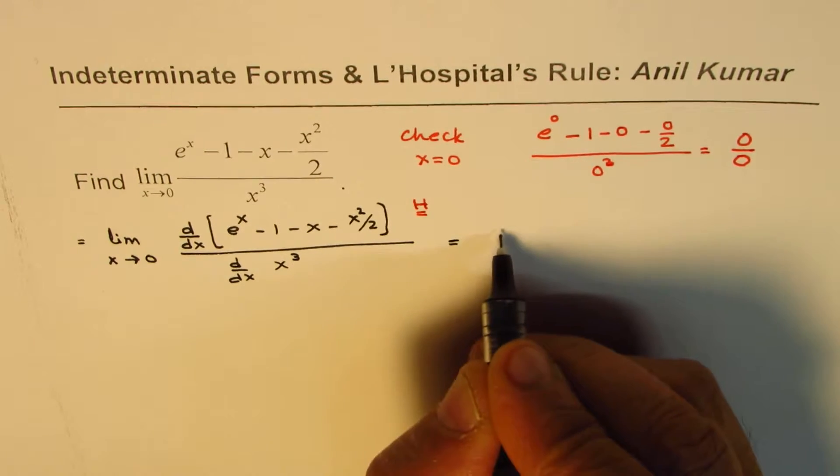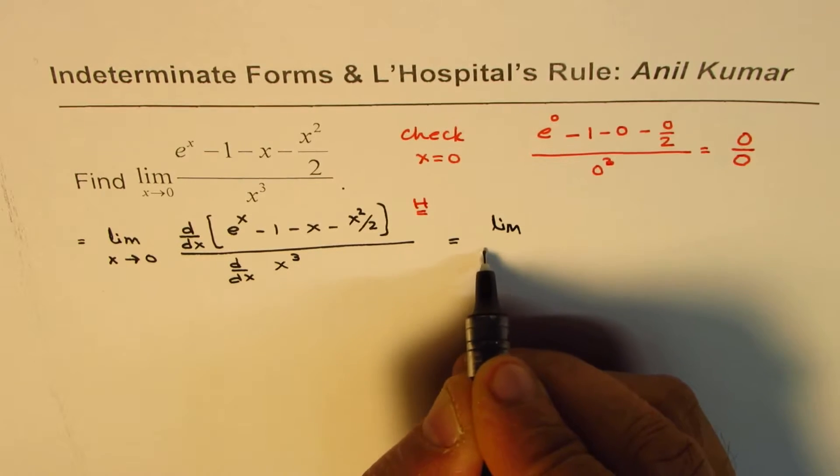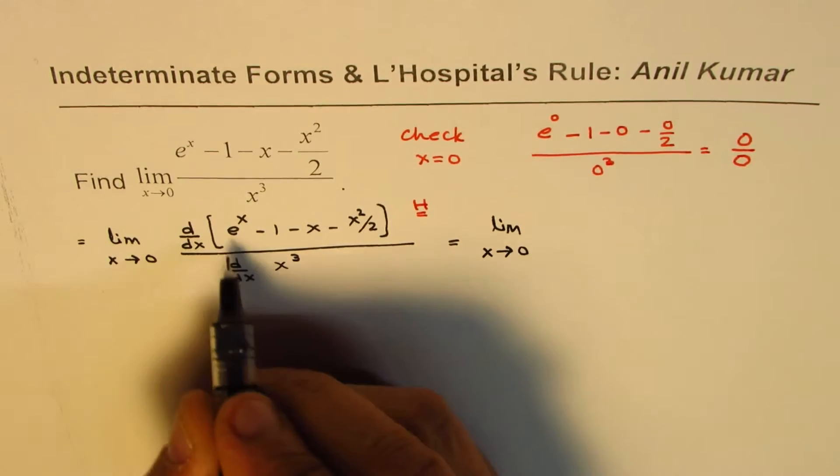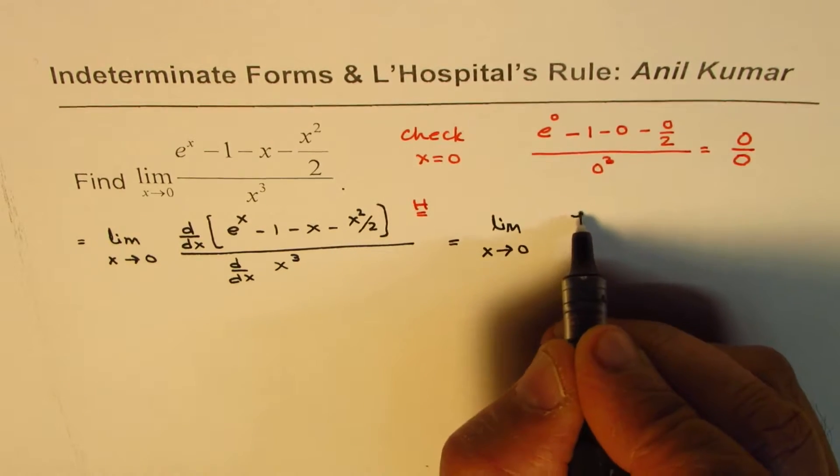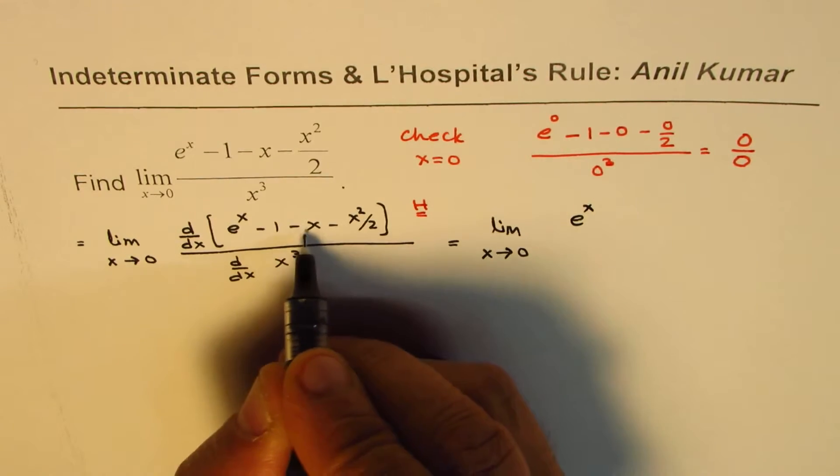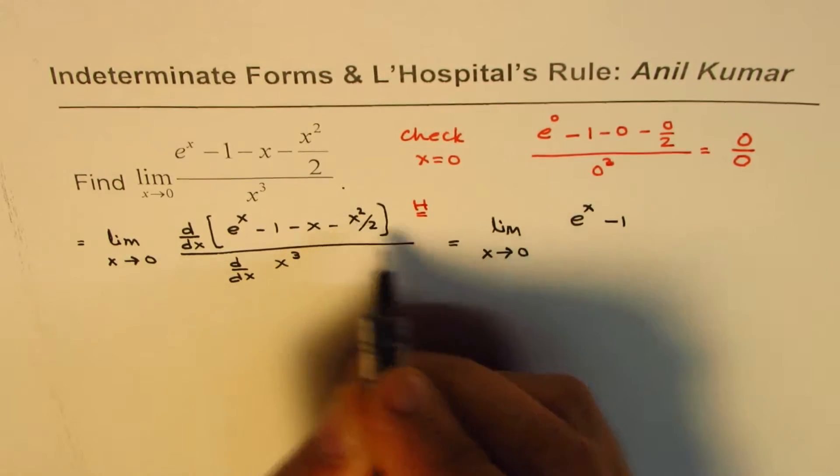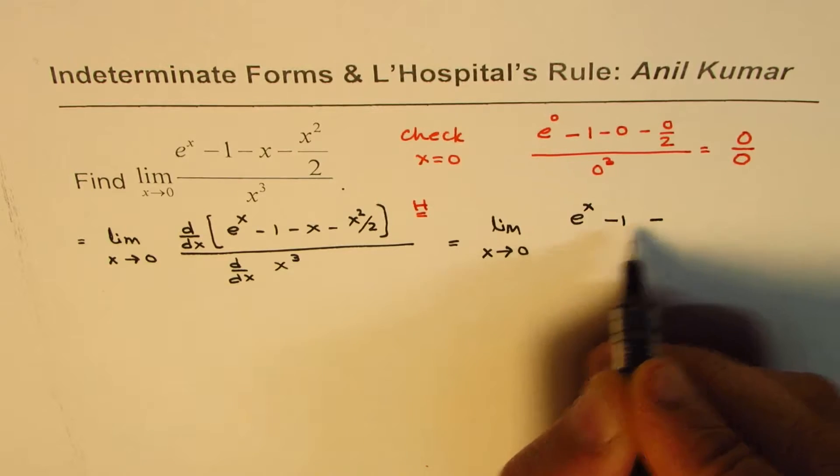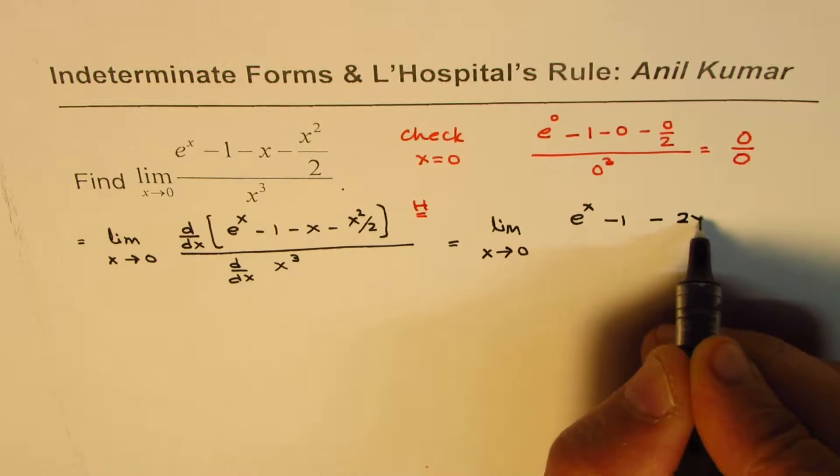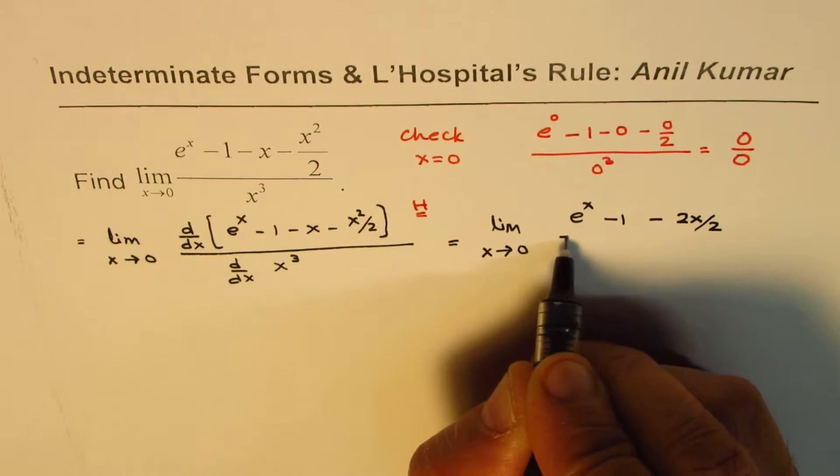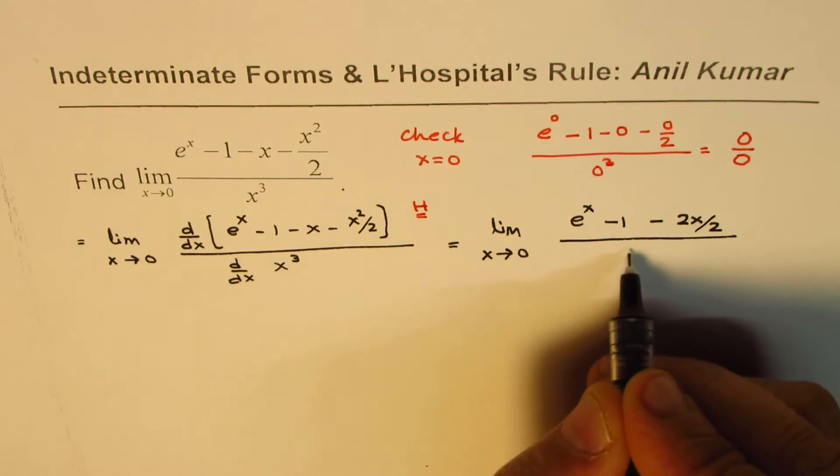So that gives us limit as x approaches 0, e to the power of x, this is 0, this is minus 1, and here we get minus 2x divided by 2 divided by 3x square.